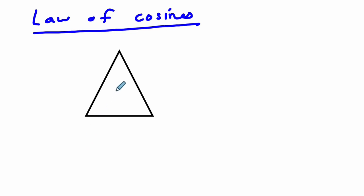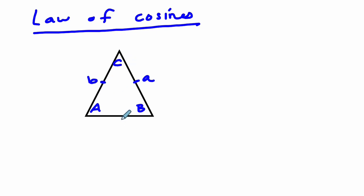So when can you use the law of cosines and not the law of sines? Pretend you have this triangle — side A across from angle A, angle B across from side B, angle C across from side C. What if I gave you all three sides? The first case is when you're given all three sides.